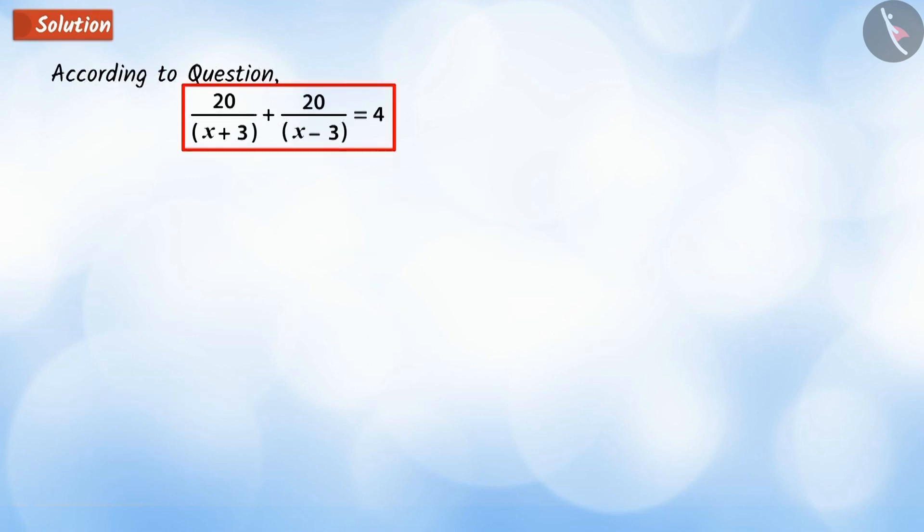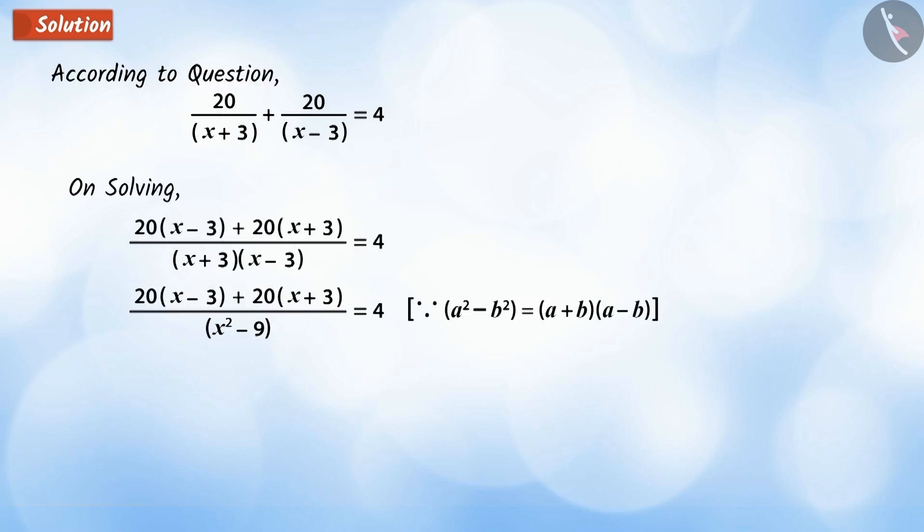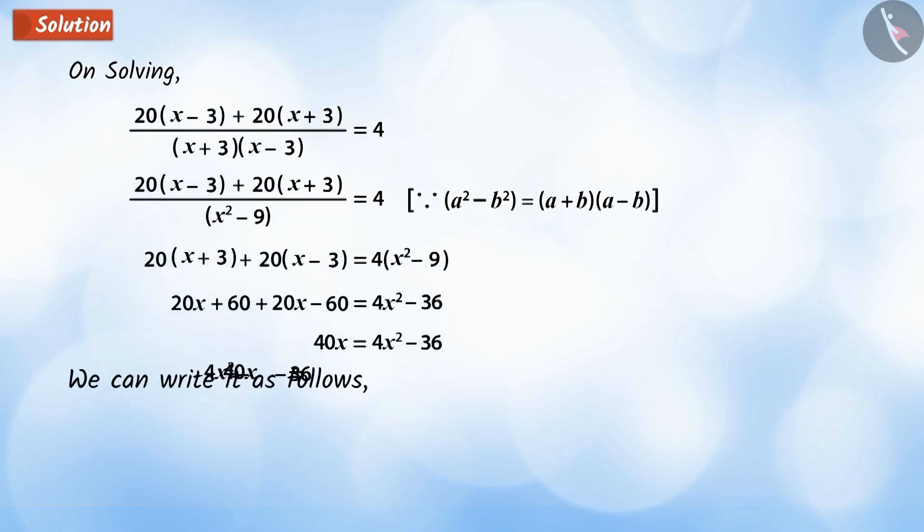According to the question, Tarun spent 4 hours on the ship. By simplifying the above equation, we get 40x equal to 4x to the power of 2 minus 36. It is denoted by equation 1, which is a quadratic equation.